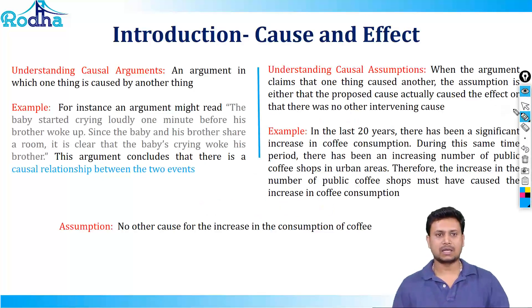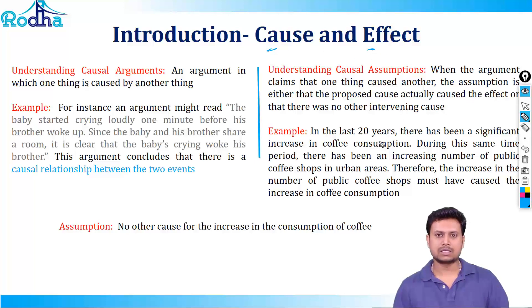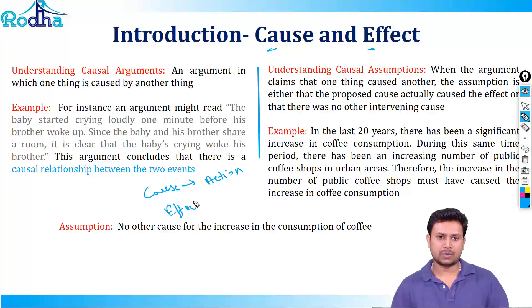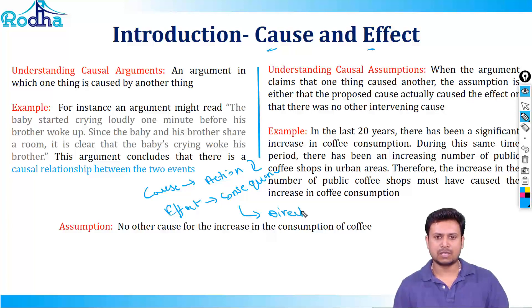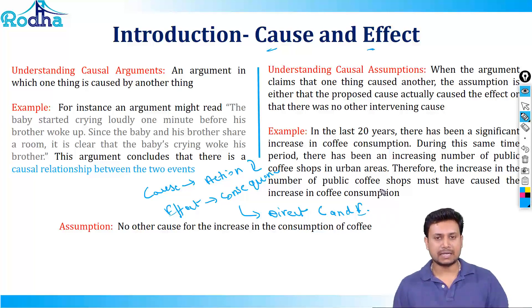Before we move on to understand how to classify causal arguments and assumptions, let's first understand what the term cause and effect means. In simple terms, cause is anything that is an action — a stimulus — and anything which is the response to the stimulus is the consequence. Consequence is the effect created from the cause. When we say cause and effect, we are always talking about direct cause and effect — anything where a cause leads to an impact directly.